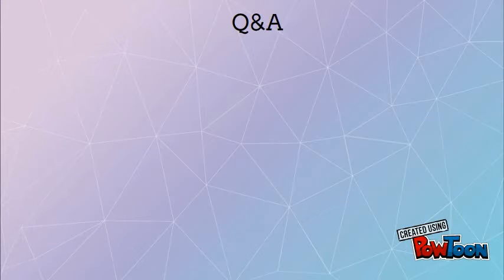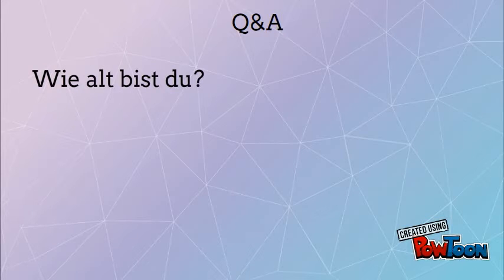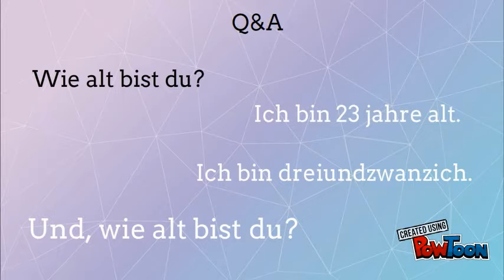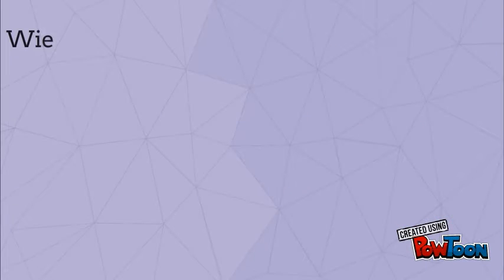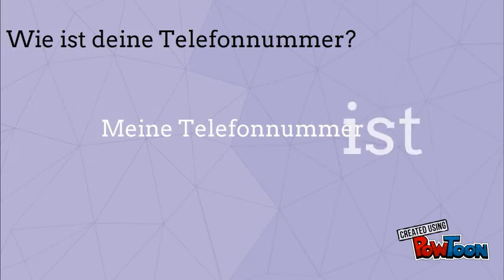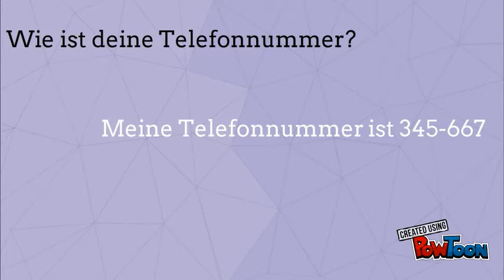Now let's go over some questions and answers. Wie alt bist du? Ich bin 23 Jahre alt. Oder: Ich bin 23. Und wie alt bist du? Welche ist deine Telefonnummer? Meine Telefonnummer ist 345 667.